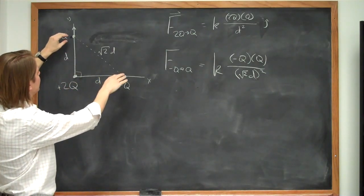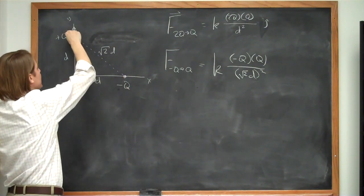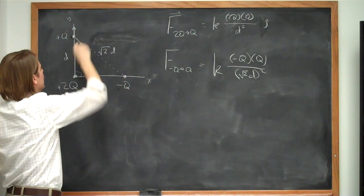So that is the magnitude of this force. Now we have to think about the direction. So this is positive and this is negative. So it's going to be a vector. It's going to be attractive. So it's going to be a force kind of going down like that.